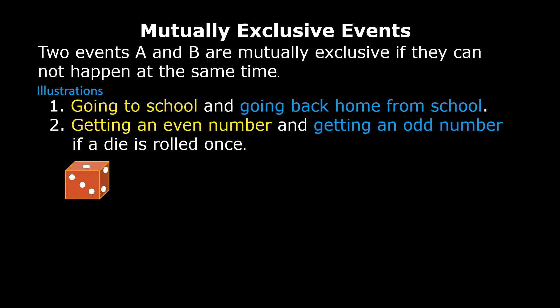If a die is rolled, these are the possible outcomes: one, two, three, four, five, and six.